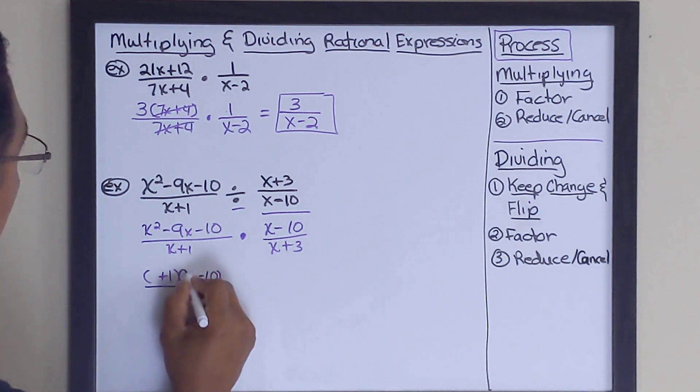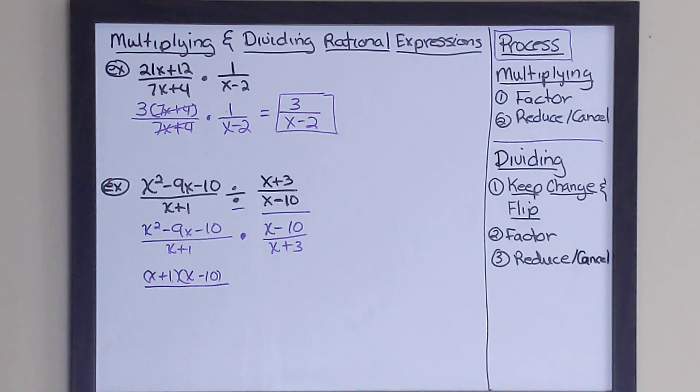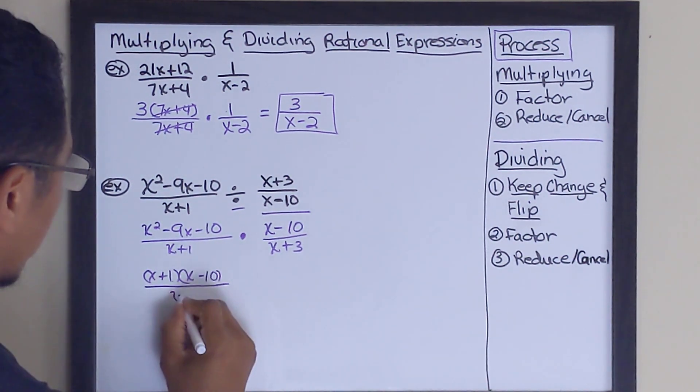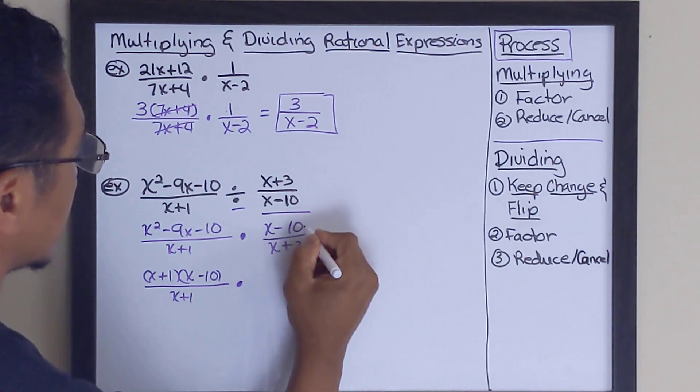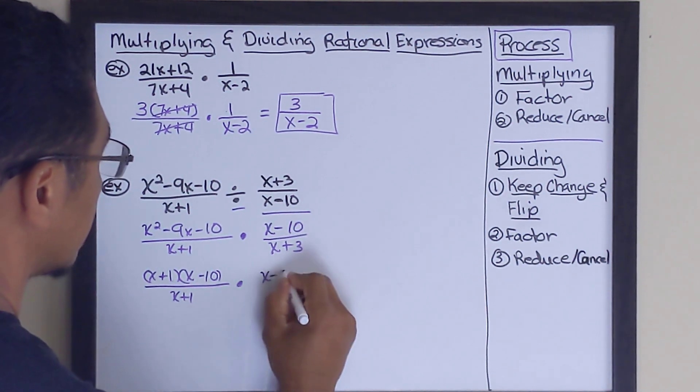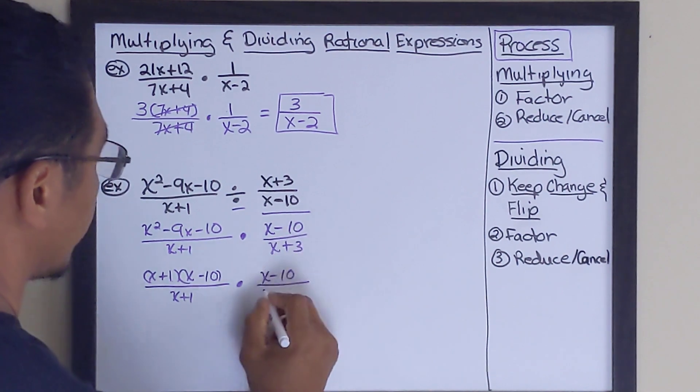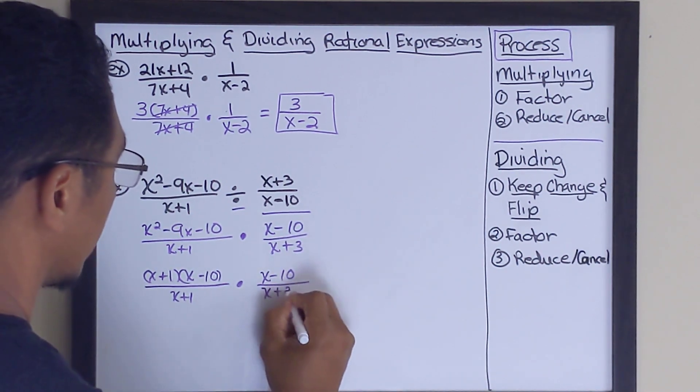And of course, our variable is an x. And we just put that here. The denominator is not factorable, so we're going to keep that as x plus 1. Times, this is not factorable, x minus 10. This is not factorable, so we keep that as it's also x plus 3.